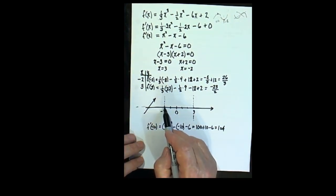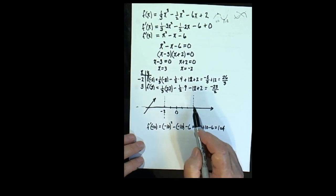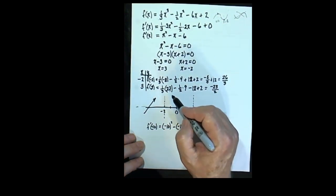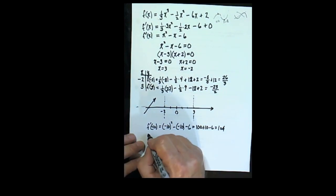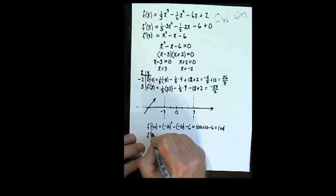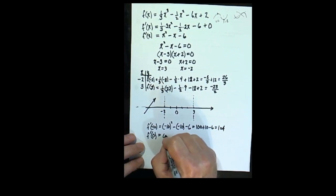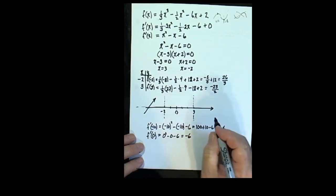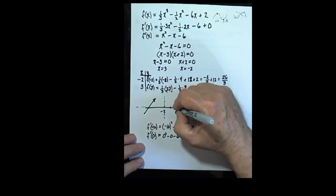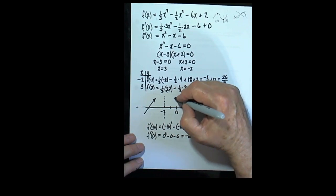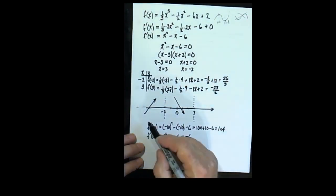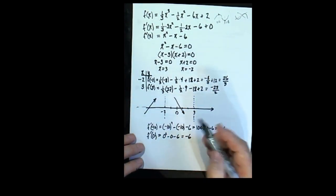Similarly, between negative 2 and 3, the function is either going up all the time, or else it's going down all the time. So, evaluate the function at a convenient point. It's easy to calculate at 0. I'm looking at the derivative. Evaluate it at 0. It will be 0 squared minus 0 minus 6 will be negative 6. So, it's going down at 0, and it has to be going down all the time in between there. So, the function goes up, then it comes down.